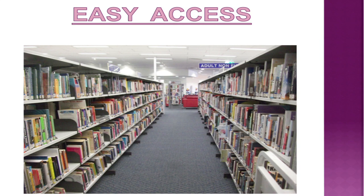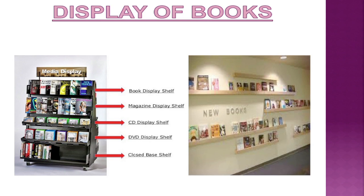Now let's talk about easy access. The height of racks in the library should not be too much — about 6 to 7 feet — so that any normal-height user can reach the books. For publicity, we can use social media and television to tell users about library services and new collections.